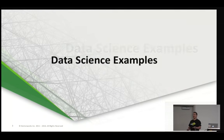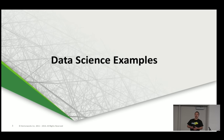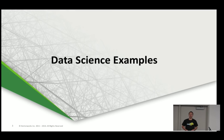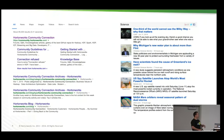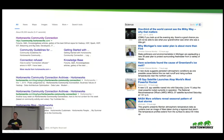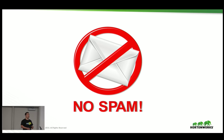Let's go over some data science examples. Starting with page rank — used in Google Search to order web pages. Google News is more of a clustering by topic. Spam detection uses a variety of interesting machine learning methods to determine whether your email is spam or not.